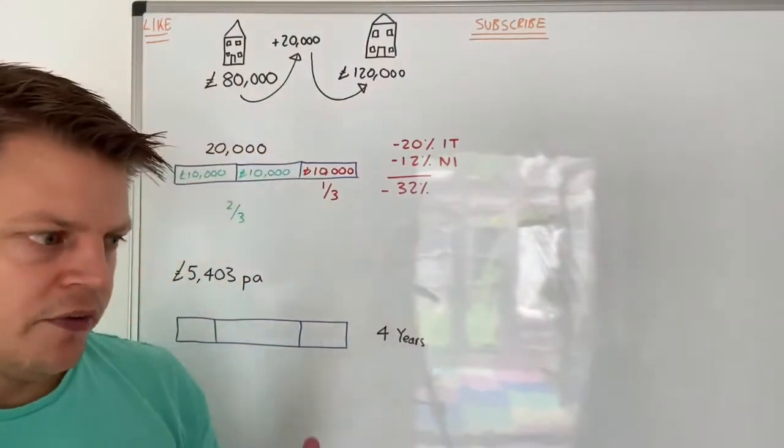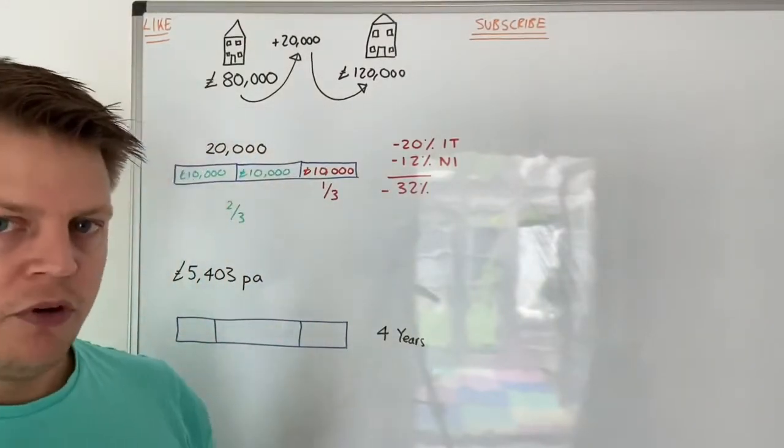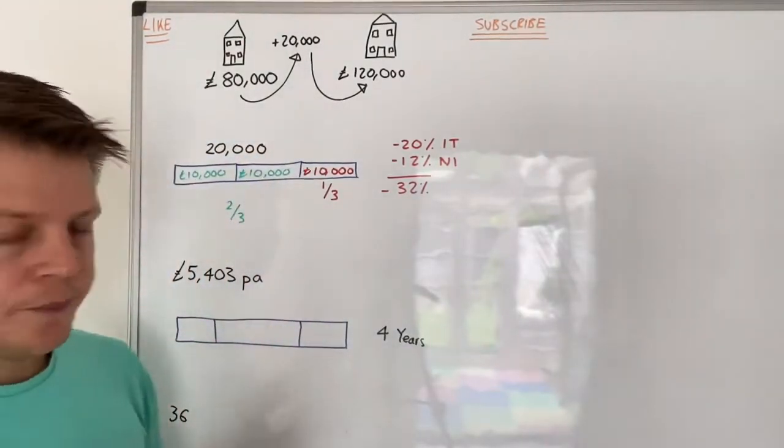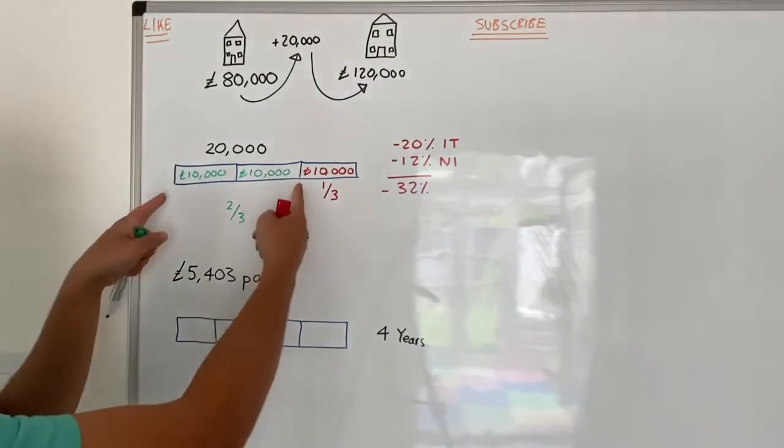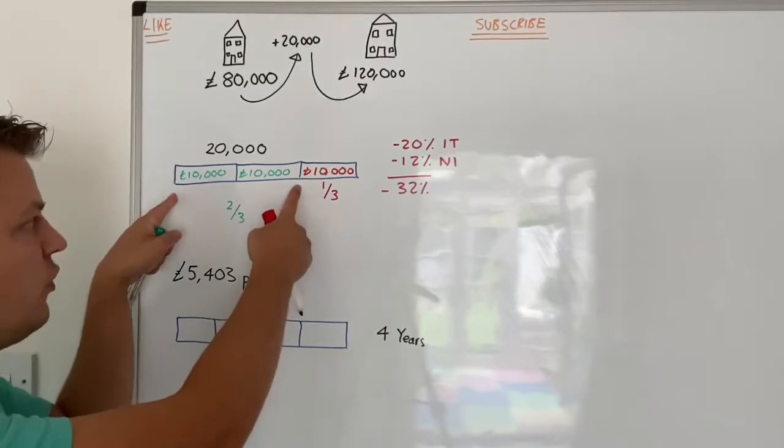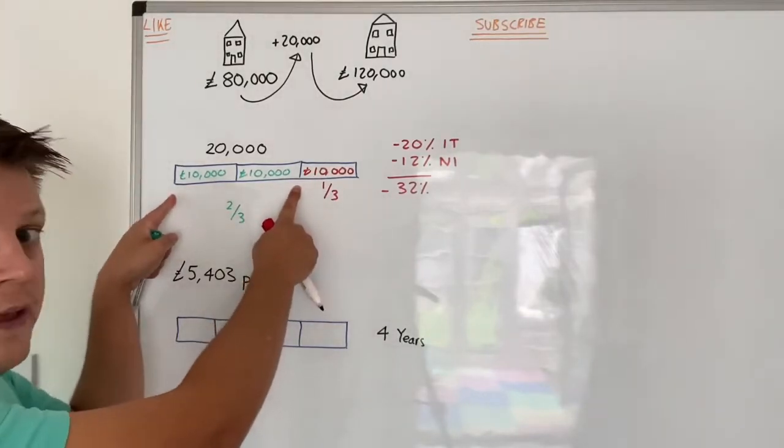Now, the challenge is you might turn around and say to me, that does not work in real life. You see, in reality, after we've got that £20,000, we can't just save £20,000 in a year. We have to live. There are expenses. We all know about that.